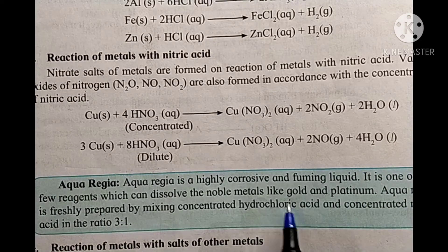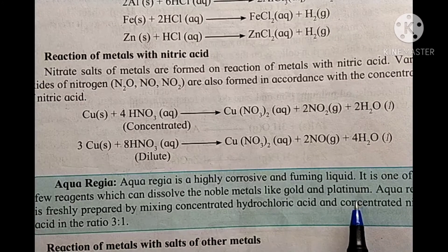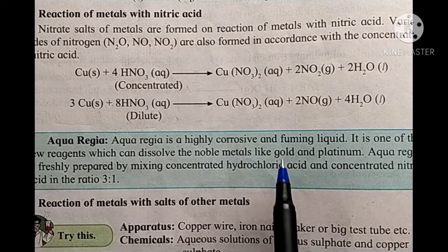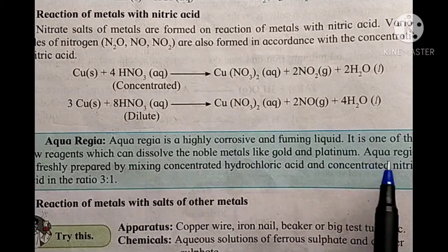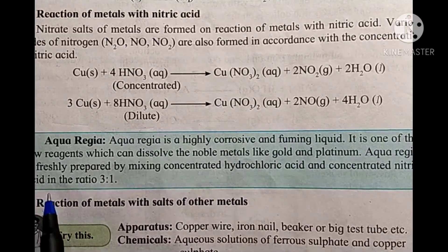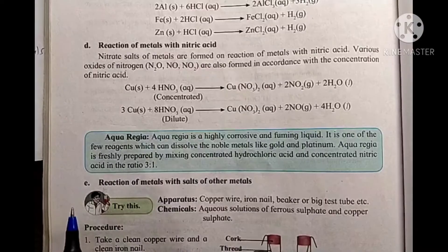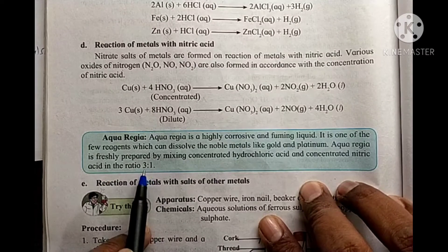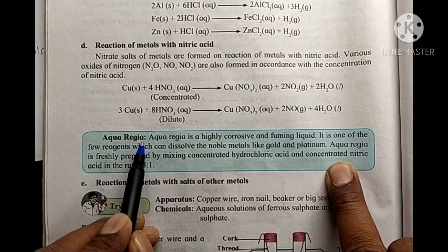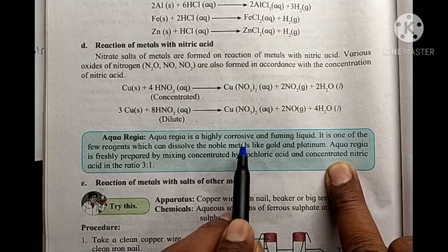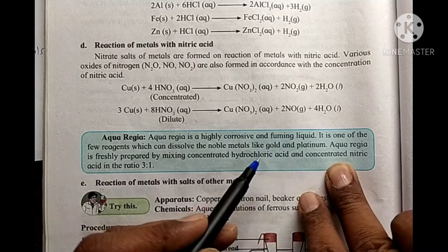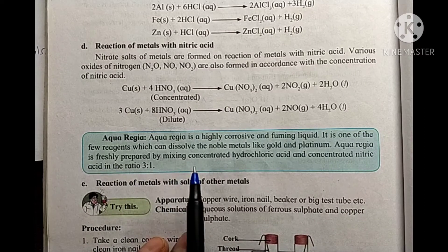Dilute nitric acid does not react with noble metals like gold and platinum. Aqua regia is freshly prepared by mixing concentrated hydrochloric acid and concentrated nitric acid — hydrochloric acid 3 parts, nitric acid 1 part. It is a corrosive and fuming liquid. It is one of the few reagents which can dissolve noble metals.